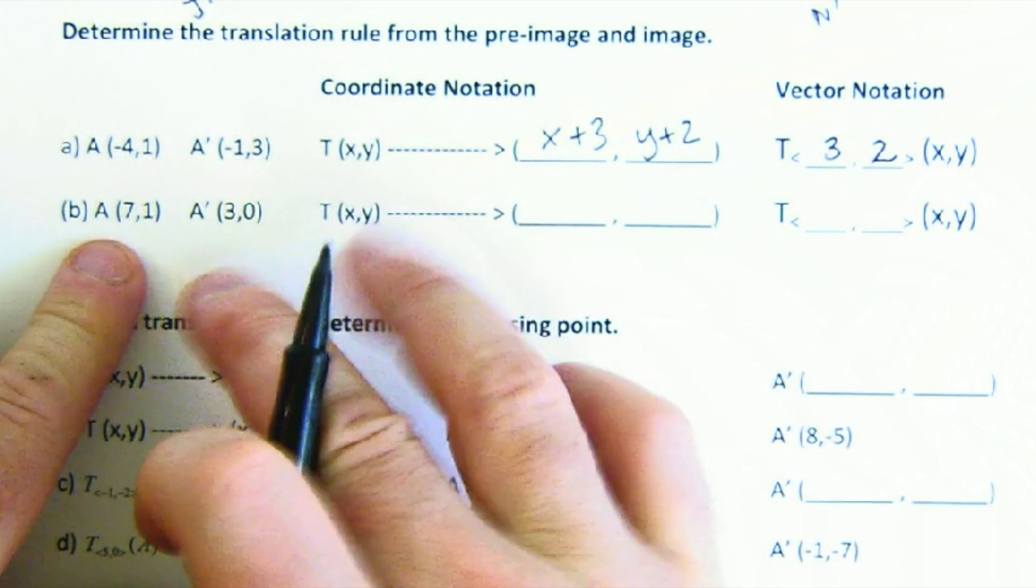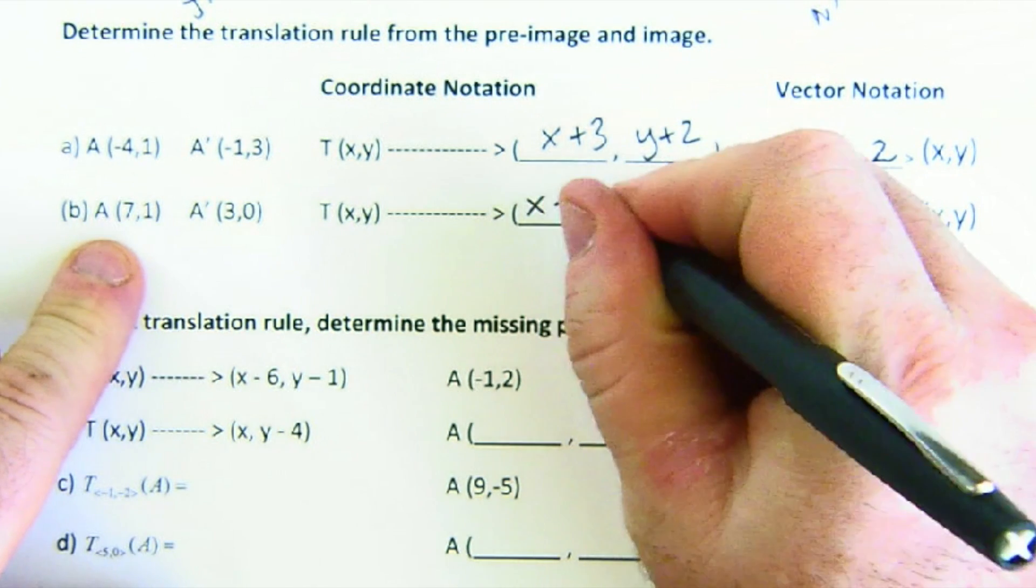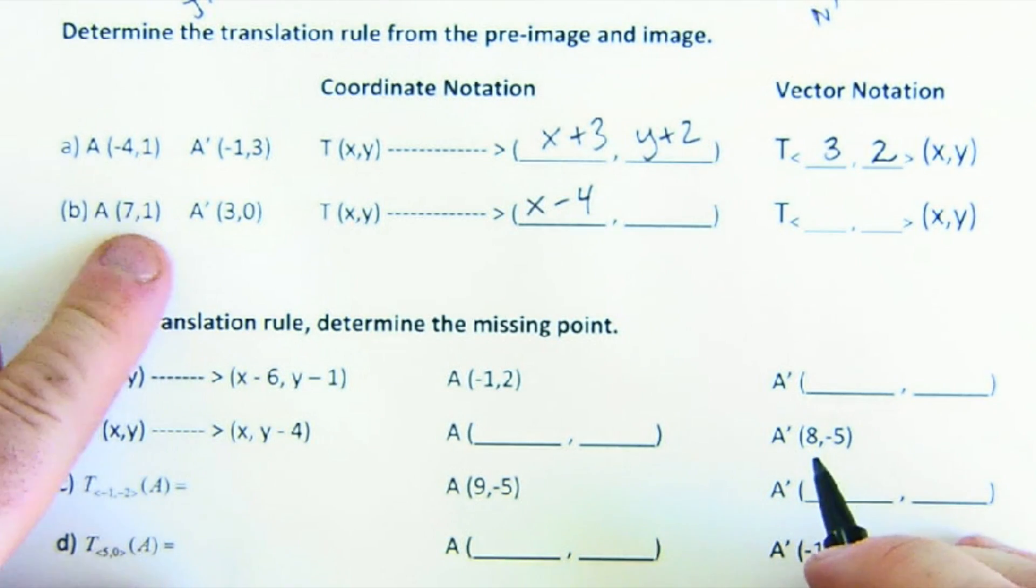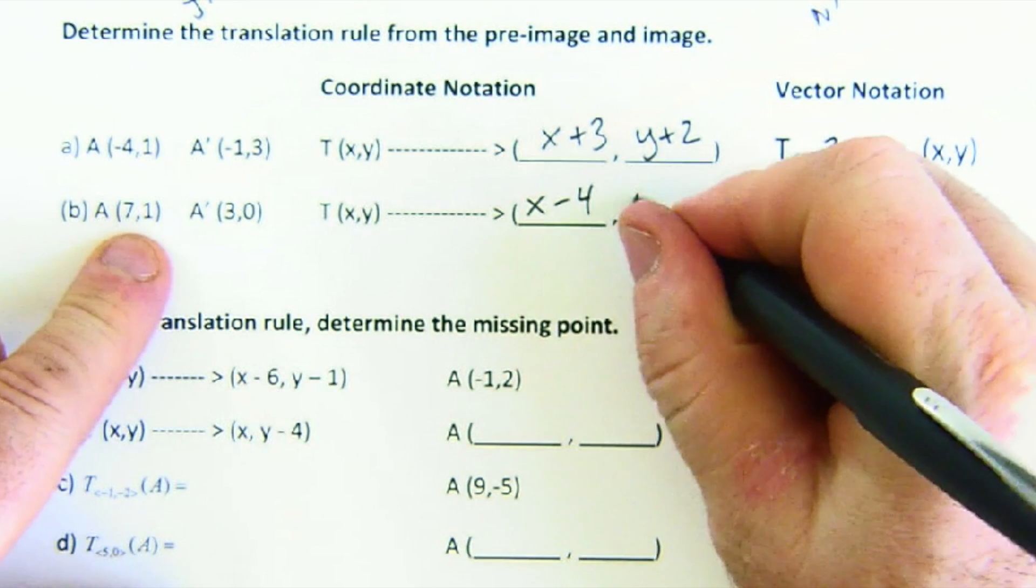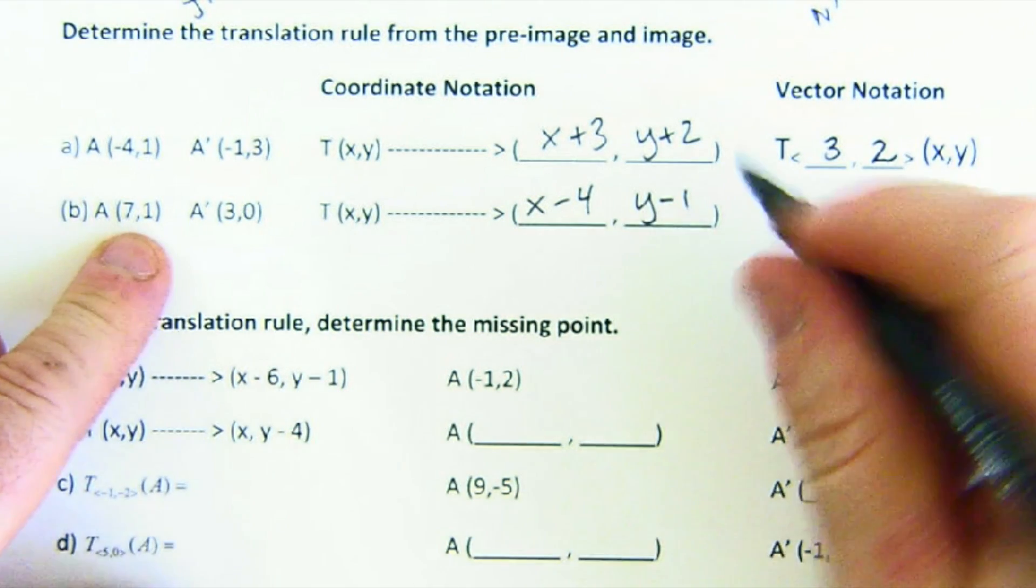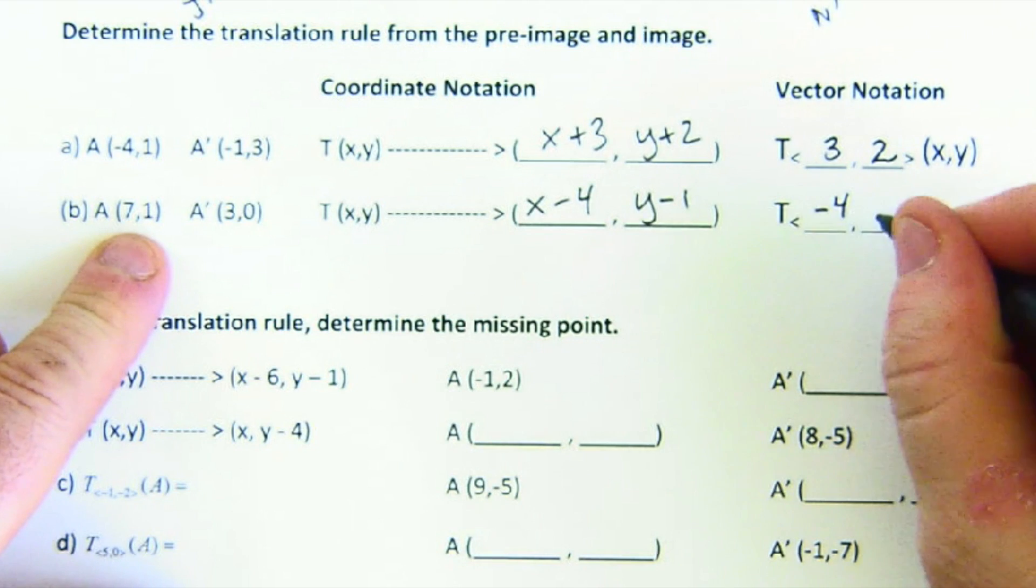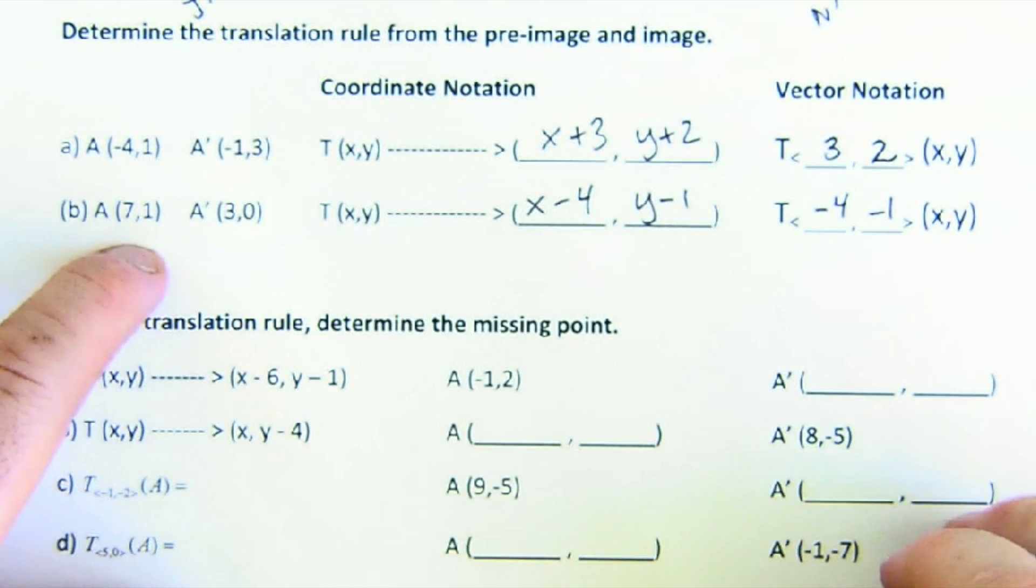So 7 went to 3. So that means we went left 4. And 1 went to 0. That means we went down 1. And again, this is the coordinate setup, and this is the vector setup of the same thing.